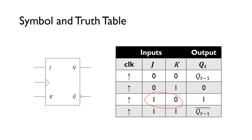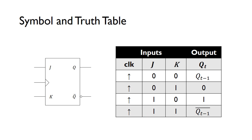If J is 1 and K is 0, we set the flip-flop, so we set the output to a 1. And if J is 1 and K is 1, this is toggle mode — the output becomes the complement of the previous output. So if the flip-flop was currently storing a 1 and we have J and K both set to 1, when the positive edge comes in, the output will toggle to a 0, and vice versa.